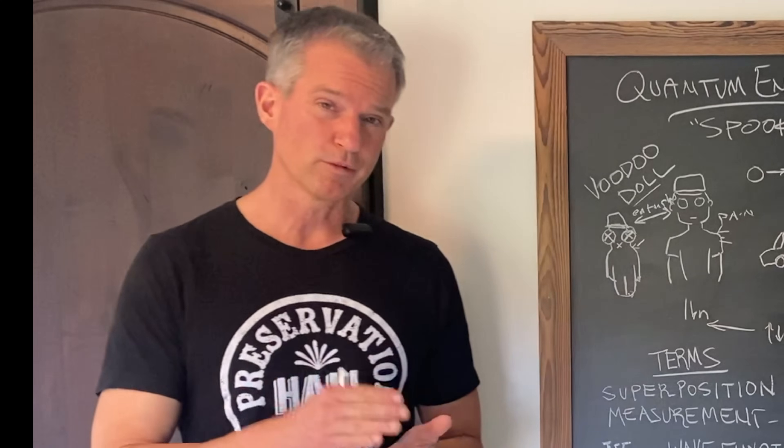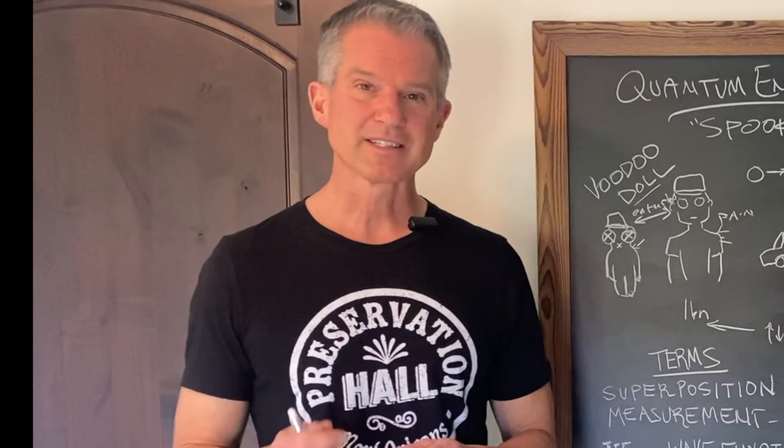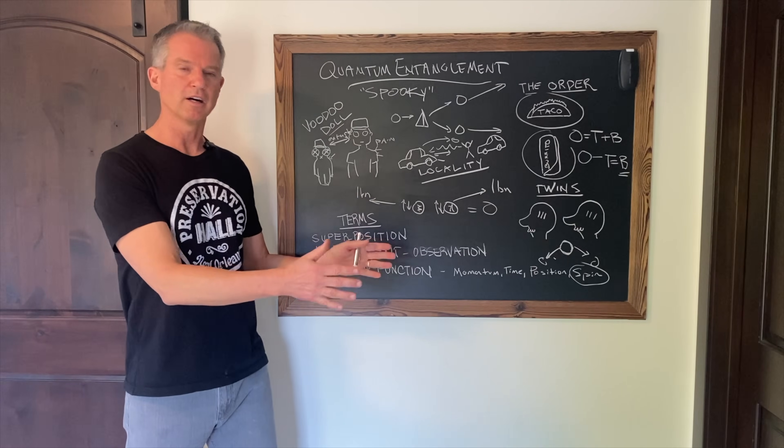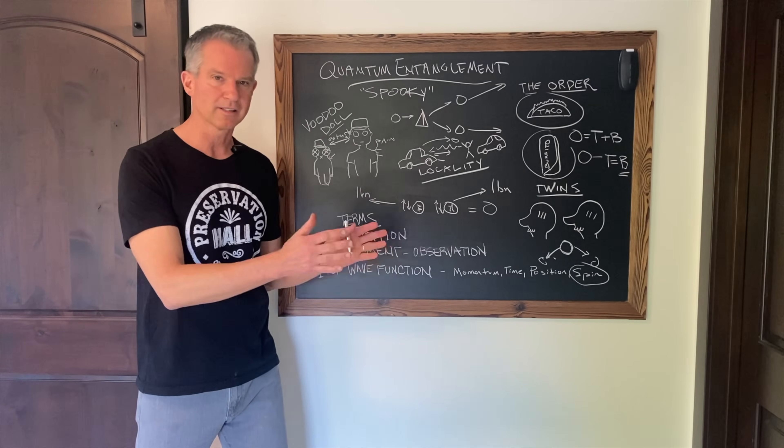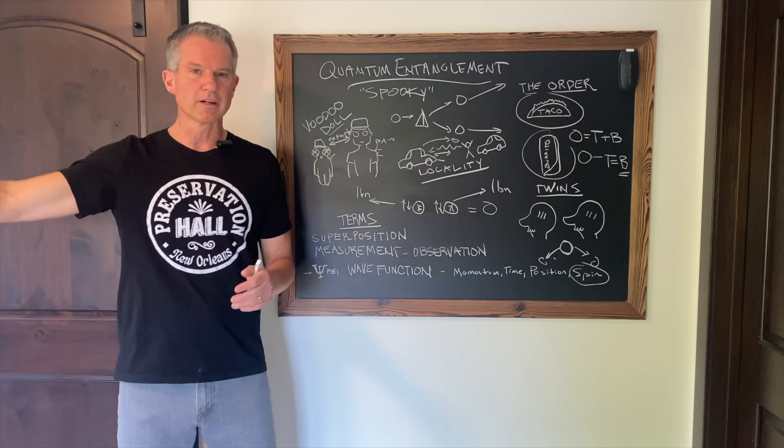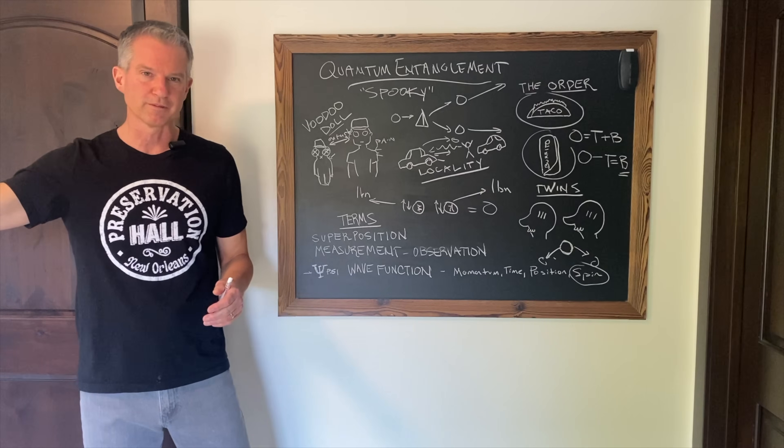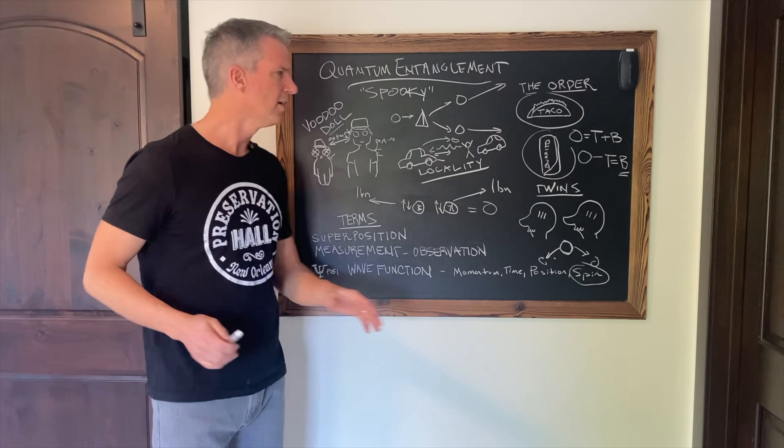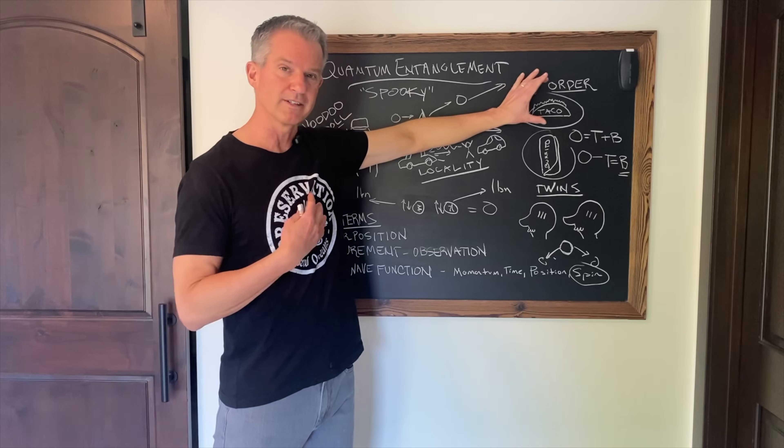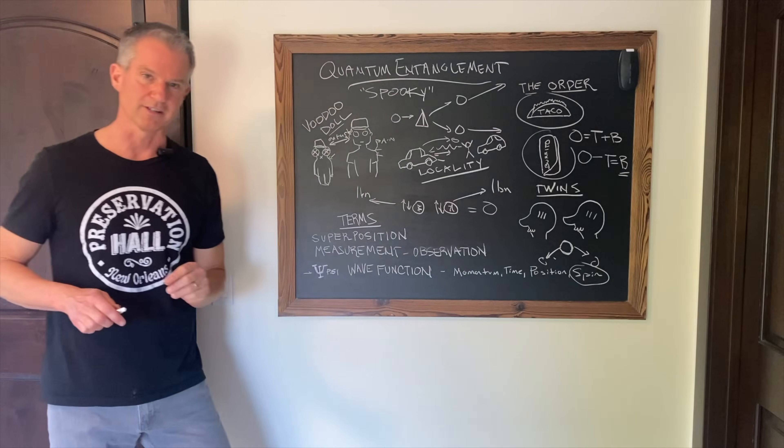Now, let me just say this. If that were all it was, that's not that big of a deal. If I get a box of gloves and there's only a right-handed glove, I know that somewhere is the left-handed glove. There's nothing spooky about that. There's nothing spooky about knowing that if I have a taco, my friend has a burrito.